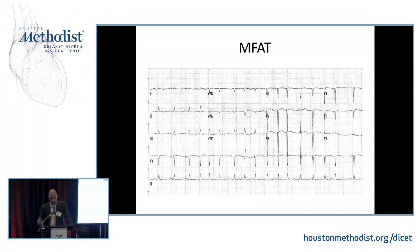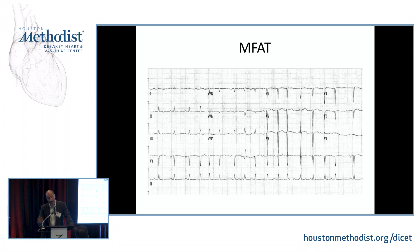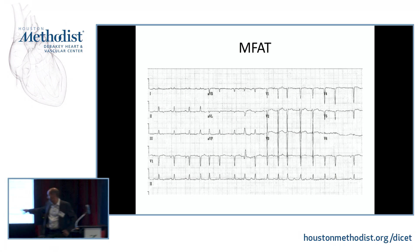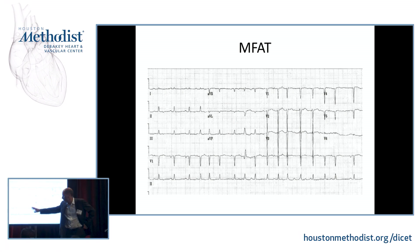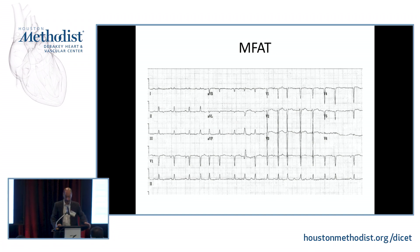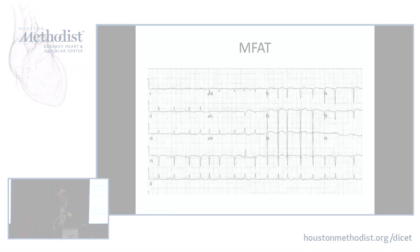Multifocal atrial tachycardia occurs in the setting of hypoxia and usually lung disease. It is defined as an atrial tachycardia with at least three different P wave morphologies and no single dominant one. You will see sinus and P waves coming from different areas. It also occurs in the context of digoxin toxicity.